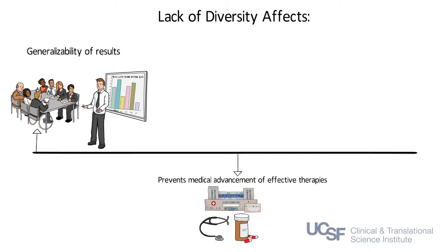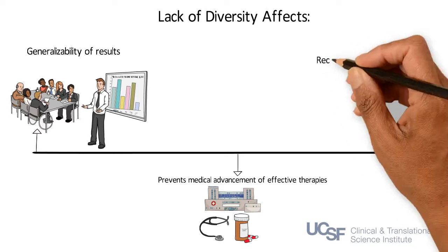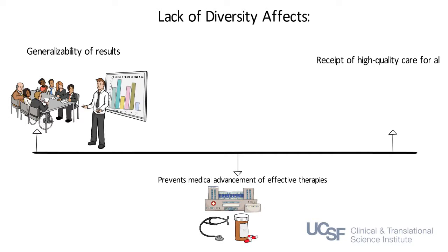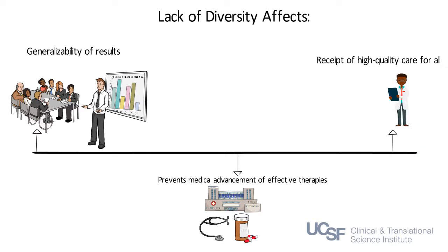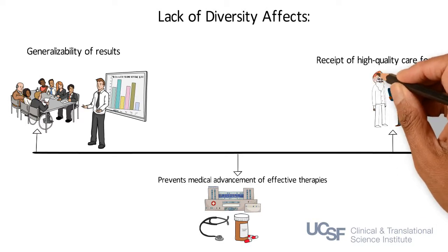For example, up to 75% of Pacific Islanders are unable to convert an anti-platelet drug into its active form, leading to a higher risk for adverse outcomes following angioplasty, which is why it is critical to have diversity in drug trials like these to ensure that treatments will benefit everyone.